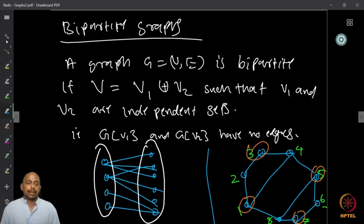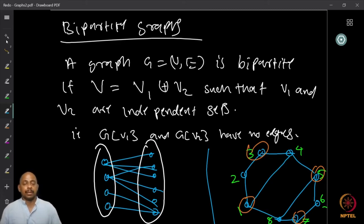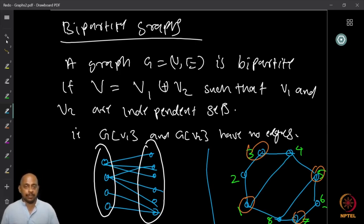Here is another important notion: bipartite graphs. A graph G is bipartite if I can write the vertex set as a disjoint union of two sets V1 and V2 such that both V1 and V2 are independent sets. An independent set is a subset of vertices where there are no edges between those vertices. So the induced subgraphs on V1 and V2 have no edges.